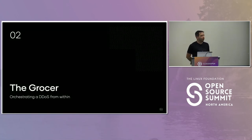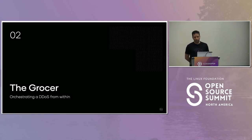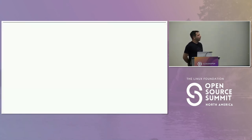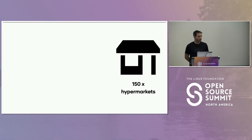Airports are cool, but let's talk about grocers. In this case, building a fancy counting script and DDoSing ourselves from within. Imagine a company that has 1,200 retail locations. 12% of these — 150 — are in the hypermarket category: basically a department store and grocer in one location.